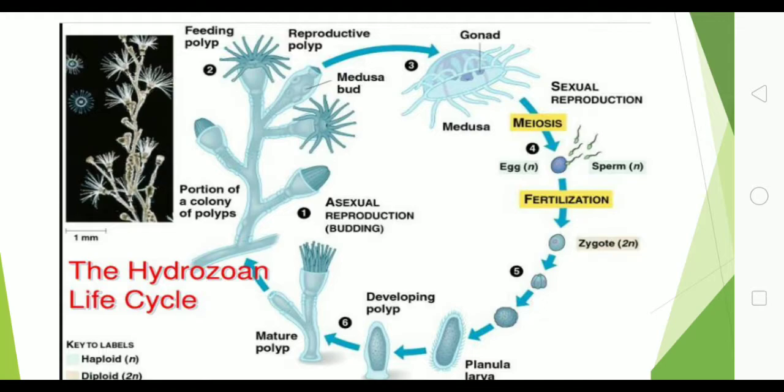The reproductive polyp performs the function of reproduction — it produces medusa. In the diagram you can observe the medusa buds. At its free end there is an opening called the gonopore, through which medusa are released into the water body. It shows sexual reproduction. Asexual reproduction is also present, shown through budding.